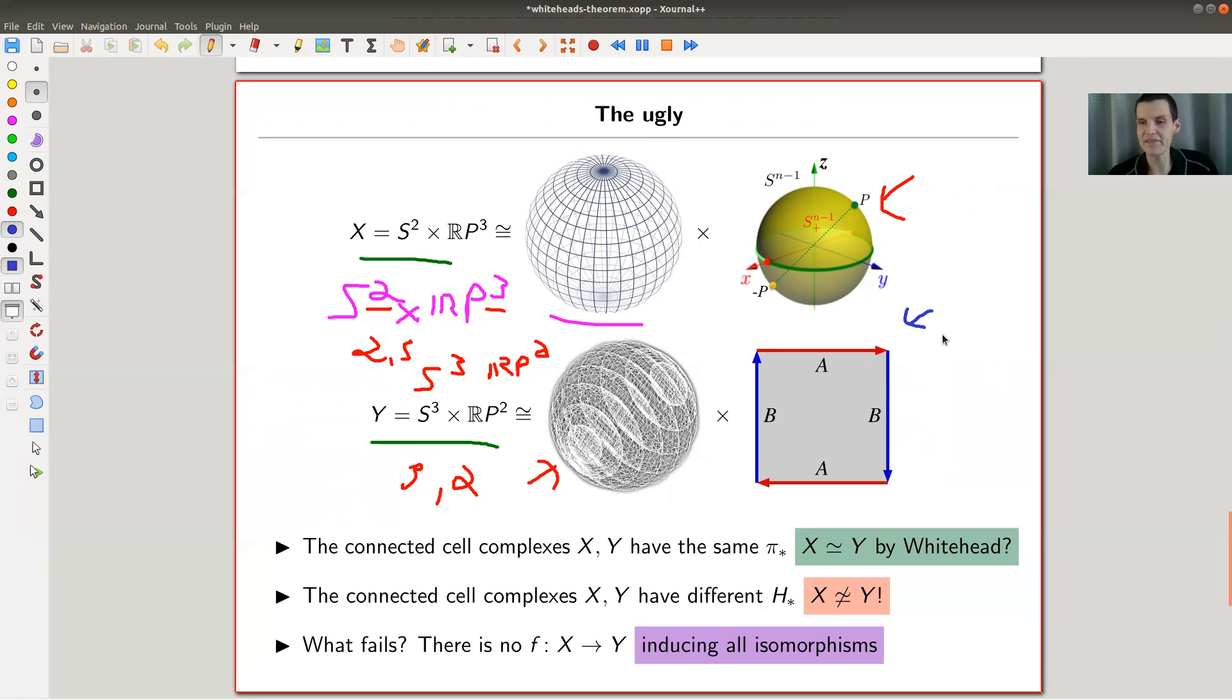And those spaces, they look very similar, right? It's S² cross RP³, or S³ cross RP², and it turns out that they have the same π family of groups. So it looks like they should be homotopy equivalent. Of course they're not, just look at the spaces, right? One of them is a sphere of dimension two, the other one is a sphere of dimension three. One of them is a projective plane, or projective space of dimension three, and the other one a projective plane. Of course they're not homotopy equivalent.